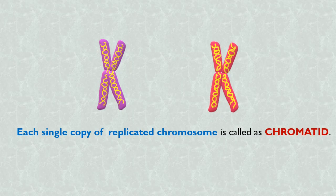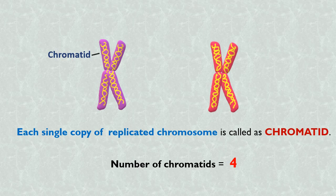So, how many chromatids are there in this cell? There are four chromatids.